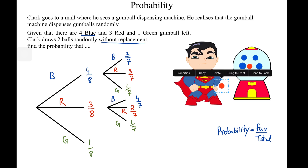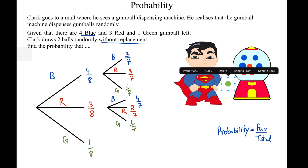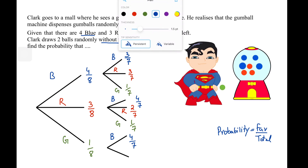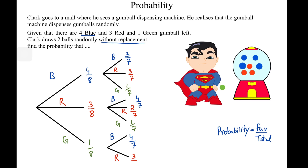What if the first gumball turns out to be green? You have to be careful here: in the second attempt you can't have green anymore, because there was only one green to begin with. So the probability of green is zero and we simply don't draw that branch. He can only end up with blue — probability 4 over 7 — or red — probability 3 over 7.